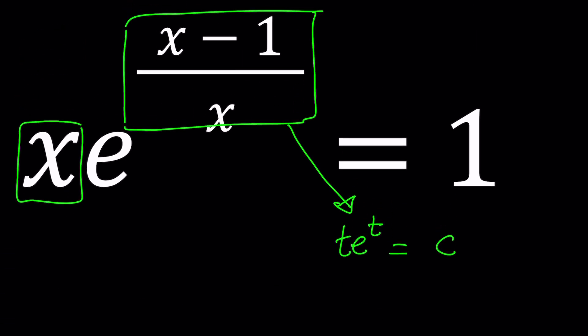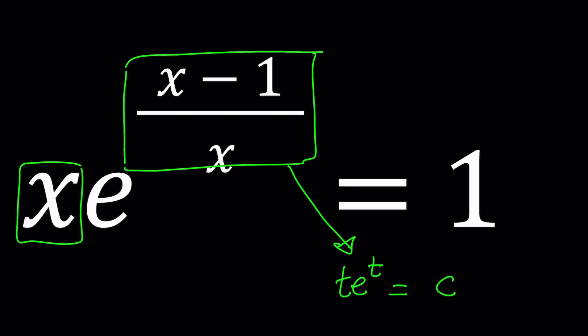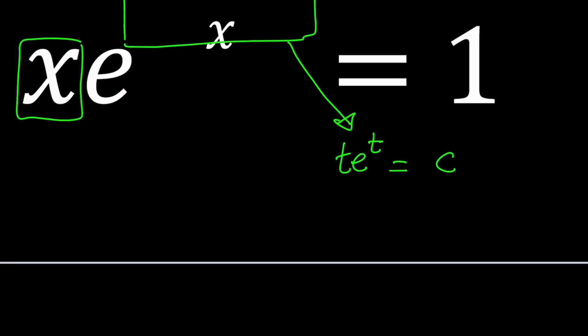So first of all, let's notice that e to the power x minus 1 over x can actually be split up into a difference, the exponent I mean. So what do I mean by that? Let's go ahead and isolate it.